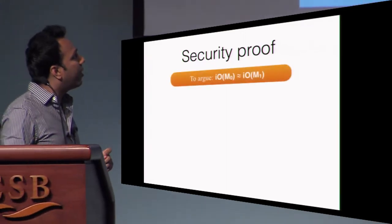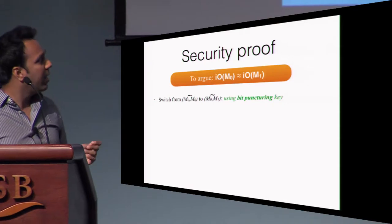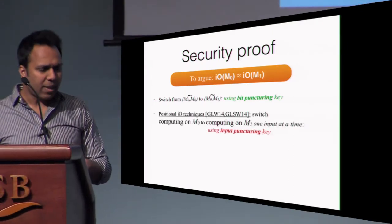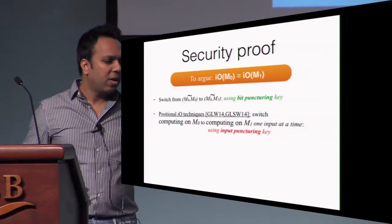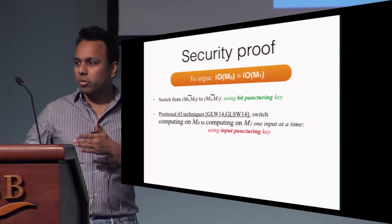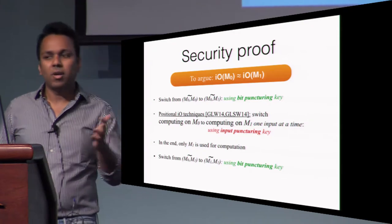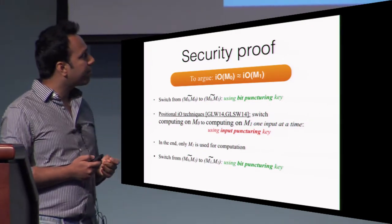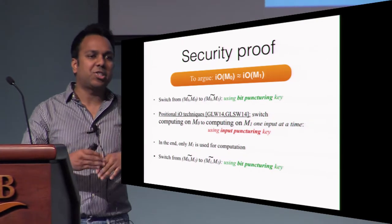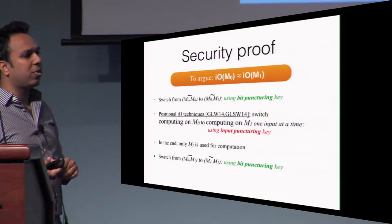Very quickly, the way we do the security proof is as follows. We want to argue indistinguishability of obfuscation of M0 from obfuscation of M1. The first step is to switch from encoding M0, M0 to M0, M1 using the bit puncturing key. Then we do the standard I.O. gymnastics — positional I.O. techniques from the works of Gentry et al. — where we switch from computing on M0 to computing on M1 one input at a time, using the input puncturing key. At the end, only M1 is being used for computation, so we switch from M0, M1 to M1, M1, again using the bit puncturing key. The main point is that the notion of OE was pretty much tailored to work with I.O. and facilitate the security proof — a natural extension of reusable randomized encodings.